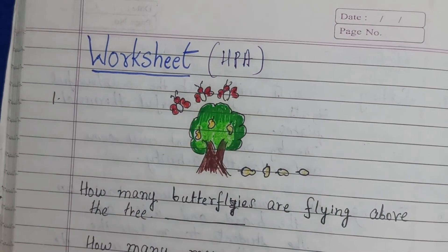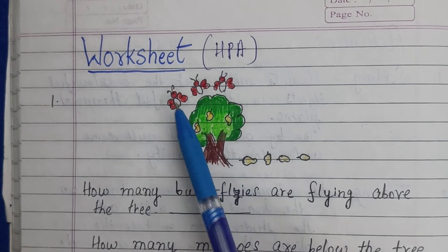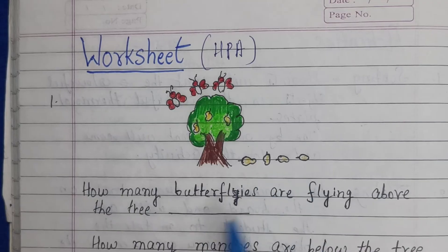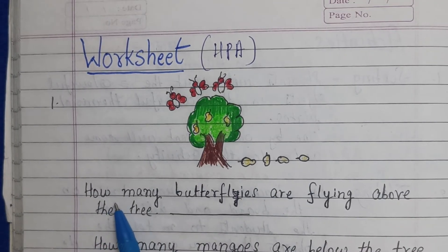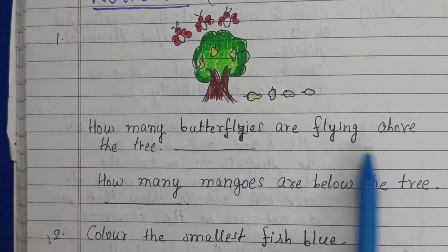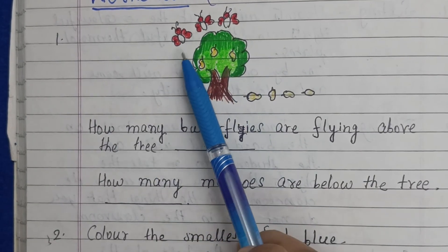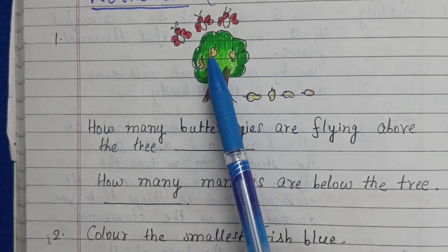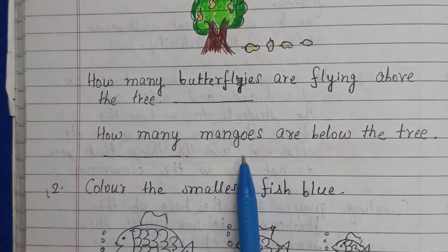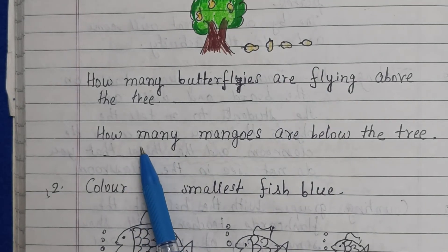Now we will look at the worksheet. There is a mango tree with butterflies flying above and some mangoes lying under the tree. You can give this worksheet in their notebooks. Question: How many butterflies are flying above the tree? Students will count and answer three. How many mangoes are below the tree? Students count and write the number 4.